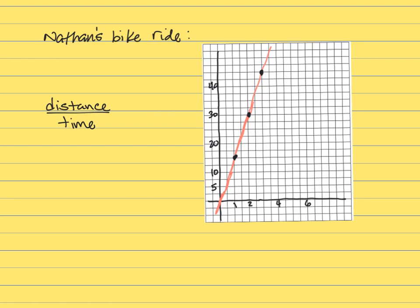Nathan's gone for his bike ride, but instead of telling me what his rate of speed was, he just showed me the graph. So I'm wondering, what was Nathan's average rate of speed for his bike ride?